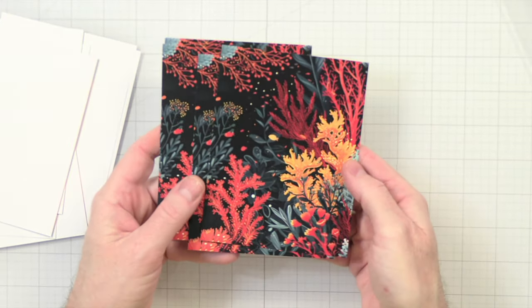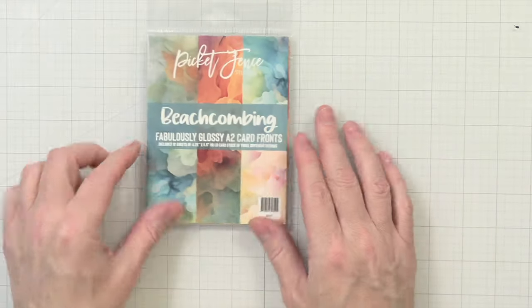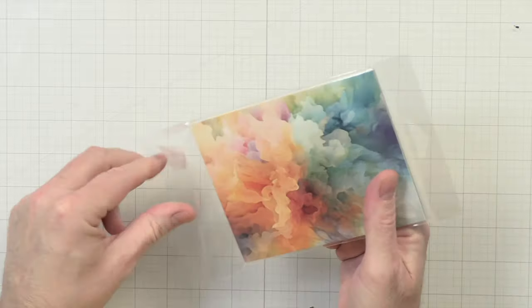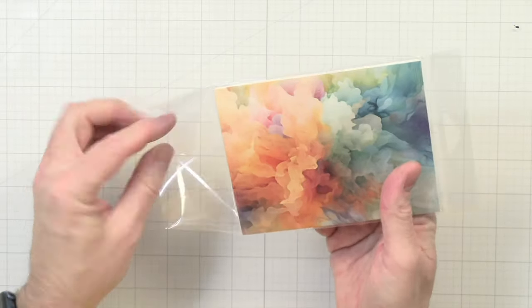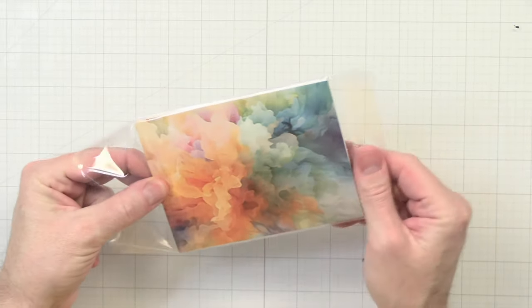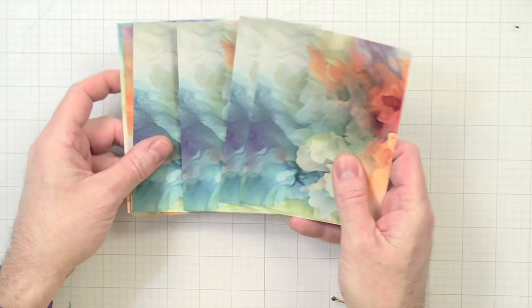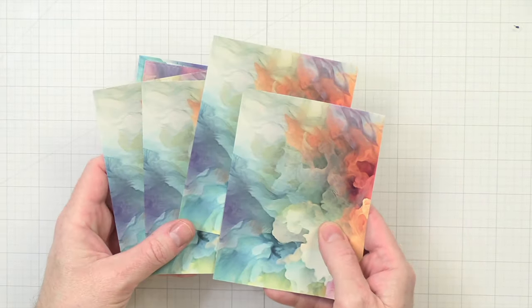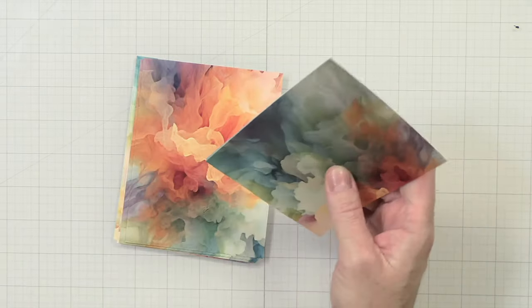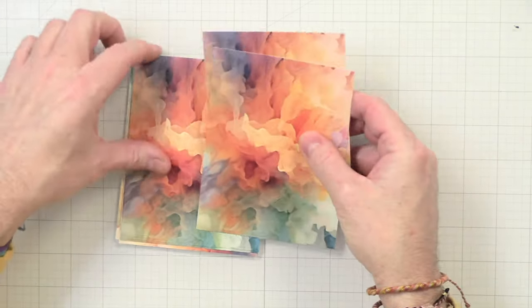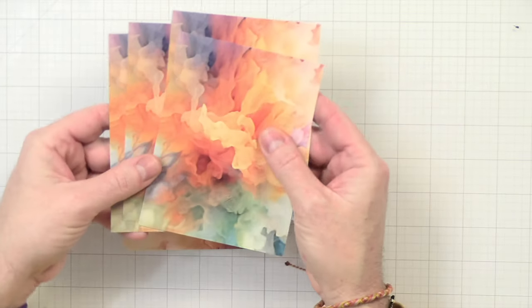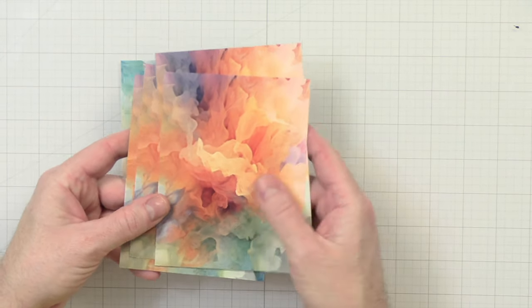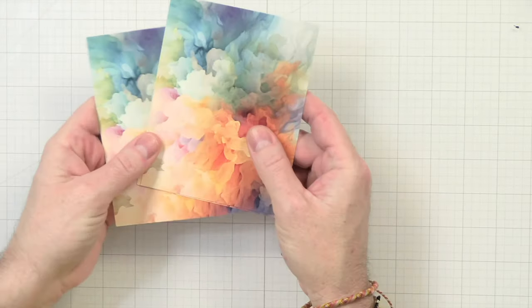Up next we have Beach Combing. I can already tell I'm gonna like these. The colors are my jam. Alright, wow those are really pretty. Looks like we have four of these. Love the pastel-ish like beachy colors. And four of these. And then four of these.